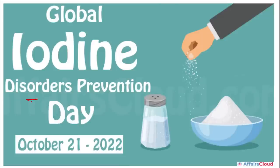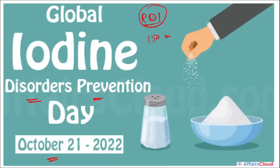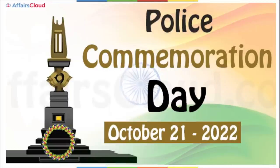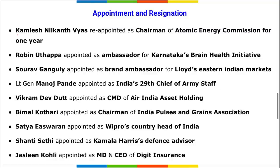Global Iodine Deficiency Disorders Prevention Day is observed on 21st October to create awareness about the importance of iodine, an essential micronutrient required for normal thyroid function, growth and development. The recommended daily intake of iodine is around 150 micrograms per day for most adults. Police Commemoration Day, also known as Police Martyrs' Day, is also observed on 21st October to remember the sacrifice of police officers who lost their lives in the line of duty.